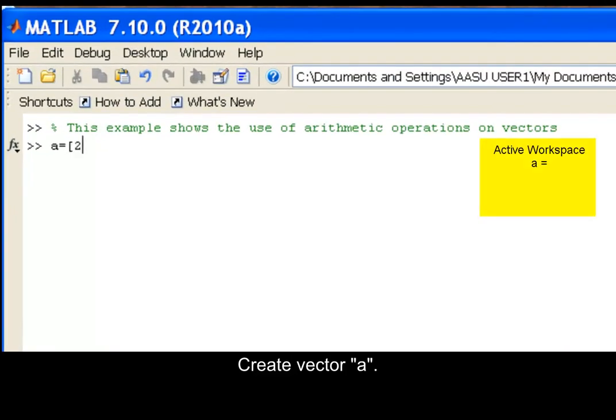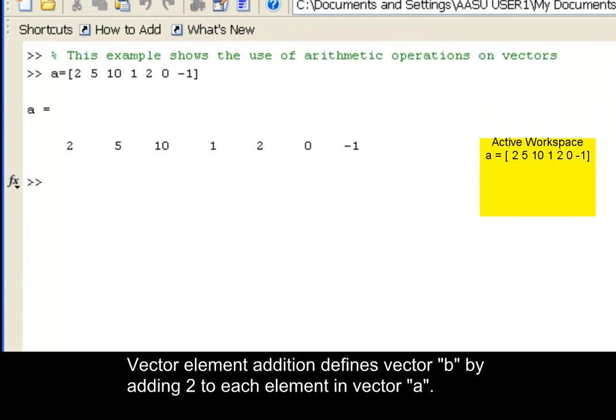Create vector A. Vector element addition defines vector B by adding 2 to each element in vector A.